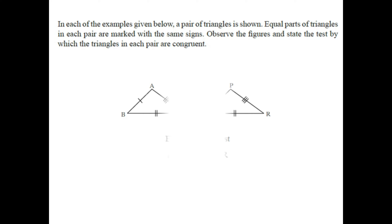Now let us solve some examples based on these tests. The question is: a pair of triangles is shown; equal parts are marked with the same signs. Observe the figures and state the test by which the triangles in each pair are congruent. In the first example, triangles ABC and PQR are given, and segment AB is congruent to segment PQ, segment BC is congruent to segment QR.